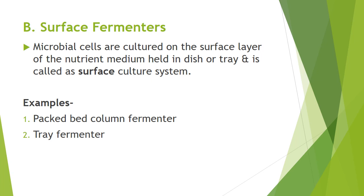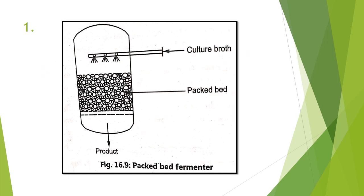The packed bed column fermenter is a type of surface culture bioreactor in which solid particles form a packed bed on which enzymes are immobilized. A liquid nutrient is allowed to flow continuously through the packed bed, and metabolic products are released in the fluid and removed on the outflow. When a film of microorganisms is formed on the surface of the packing material, it is called a film bioreactor. In the equipment, culture broth is spread on the packed bed at the top and the product outlet is at the bottom. This is a simple and easy equipment to use.